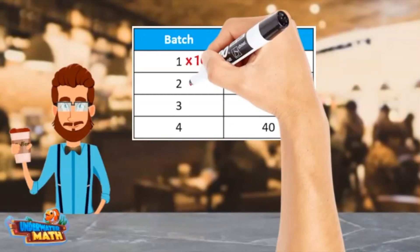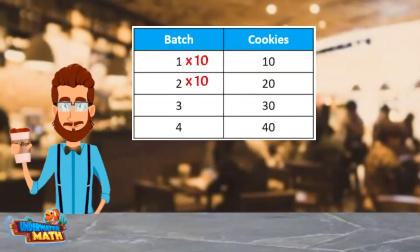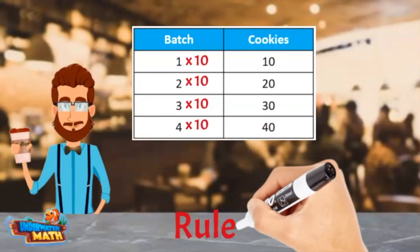1 times 10 equals 10. 2 times 10 equals 20. 3 times 10 equals 30. And 4 times 10 equals 40. This means the rule is times 10.